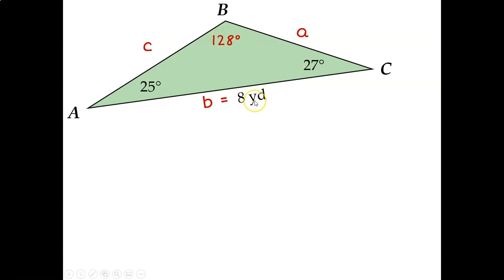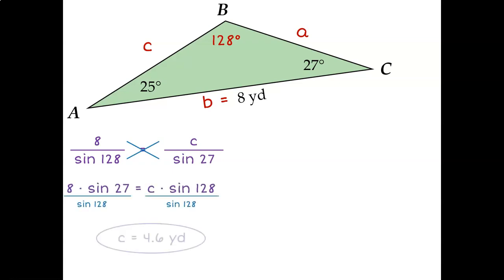So now I can write the first ratio in my law of sines proportion, 8 over sine of 128, and I'll set that equal to c over the sine of 27. Cross multiply and solve, and I find out that c is 4.6 yards. So now I have all the information I need to fill in my formula. The area of this triangle is equal to 1 half times 4.6 times 8 times the sine of 25, and that would be approximately 7.8 square yards.